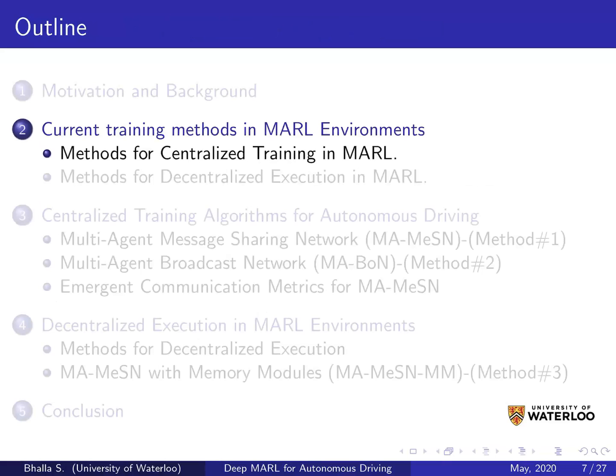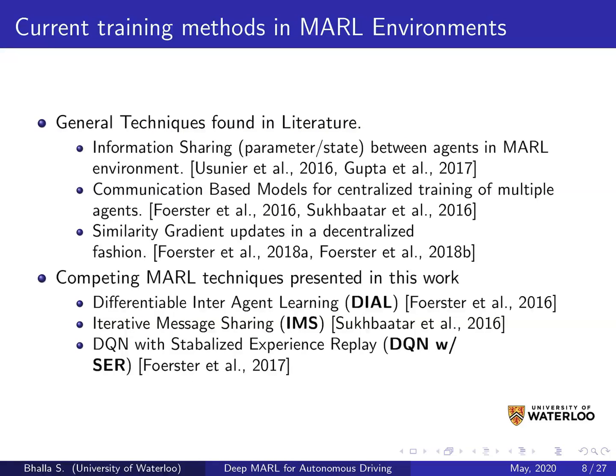Next I will go over some literature in multi-agent reinforcement learning. There are three categories of centralized training algorithms: information sharing, where agents share environment information or their own policy parameters; communication-based, where agents share messages that can be improved by iterative training; and similarity gradient updates in a decentralized fashion. In this work, we focus mostly on communication-based models.